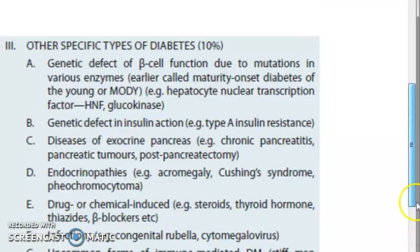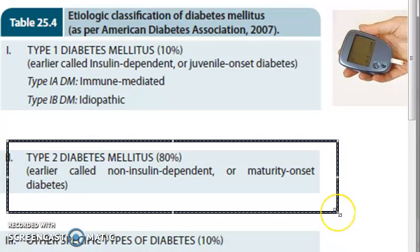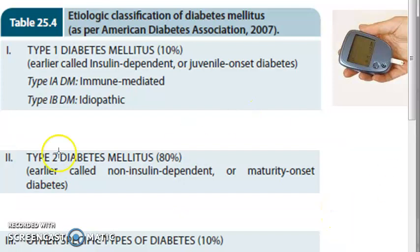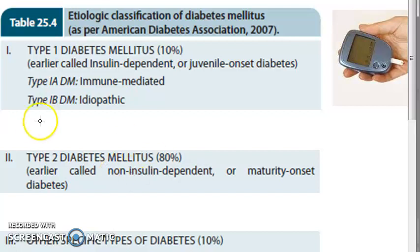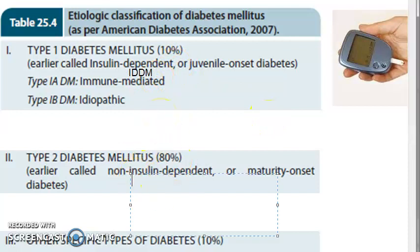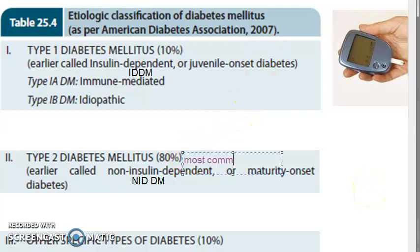Type 2 diabetes mellitus - non-insulin dependent - accounts for the maximum percentage. Earlier you had terminology like juvenile onset diabetes and maturity onset diabetes, but those terms are not used anymore. Now we use IDDM - insulin dependent diabetes mellitus - and NIDDM - non-insulin dependent diabetes mellitus. NIDDM is the most common and is seen in older people.